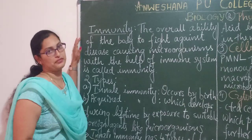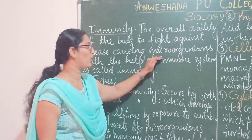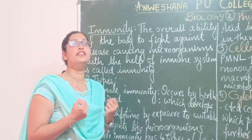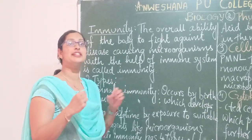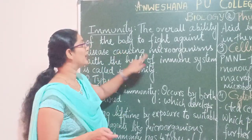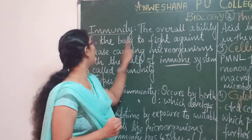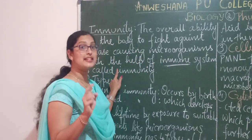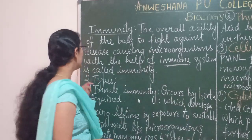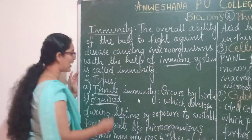So what is immunity by definition? The overall ability of the body to fight against disease-causing microorganisms with the help of the immune system is called as immunity. Immunity is that power which resides inside the body of organisms which is able to fight against foreign agents or foreign bodies. There are two types of immunity: innate immunity and acquired immunity.